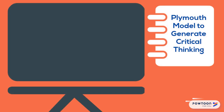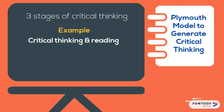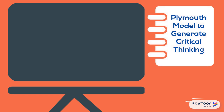Plymouth University devised a great model to help generate critical thinking, and it identifies three stages that can be applied to any aspect of your studies. As an example, we're going to apply the Plymouth critical thinking model to reading at university.